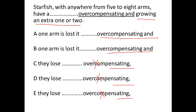If we compare the starting word, it says 'one arm is lost, it quickly replaces it.' Now in A, 'it' refers to starfish. But starfish is plural because it says 'have.' So if starfish is plural, 'it' cannot refer to starfish because 'it' is singular. So A is wrong. Hence B is the correct answer. Thank you.